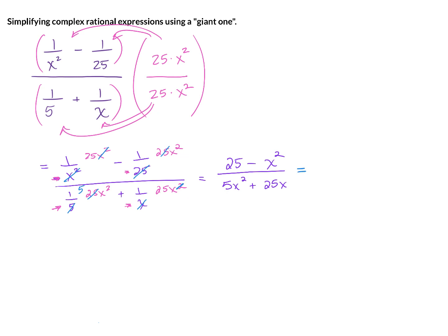So this is the difference of perfect squares in the numerator. So we have 5 minus x, 5 plus x. And in this denominator, we have a GCF of 5x, leaving us with x plus 5. x plus 5 and 5 minus x in the numerator and the denominator are the same thing. And so they will simplify, leaving us with our final answer of 5 minus x over 5x.